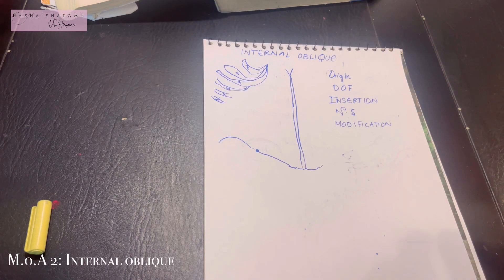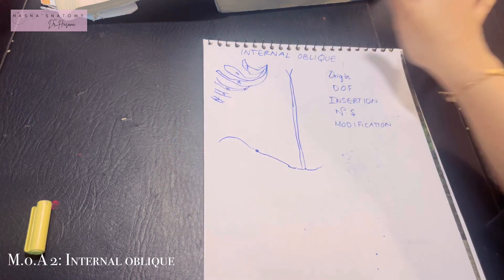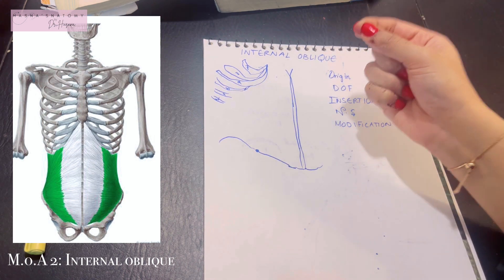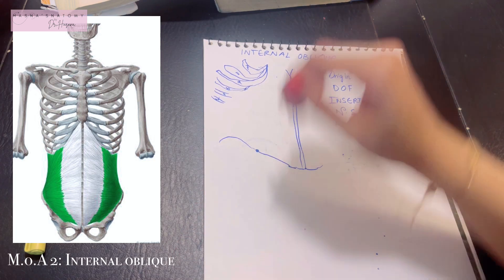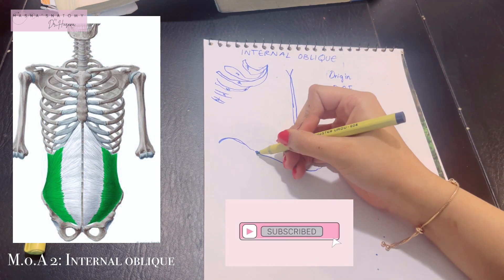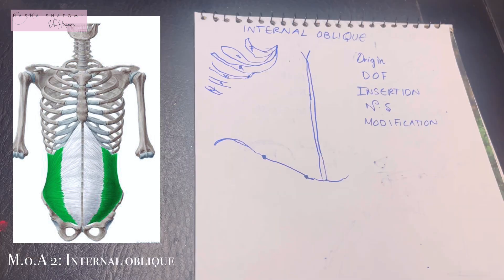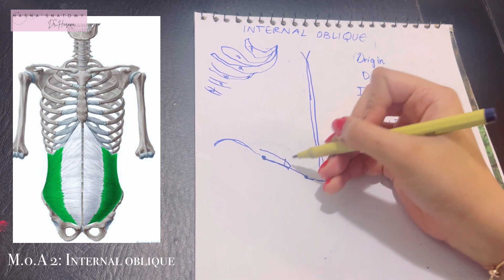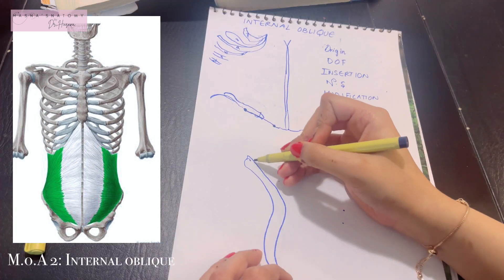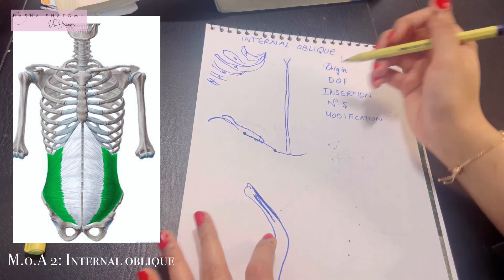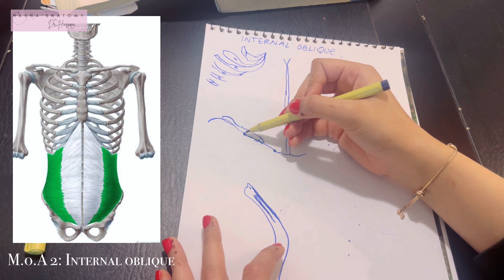Now let's talk about the internal oblique, the second flat muscle of the anterolateral abdominal wall. Its origin is quite opposite to the external oblique in that it arises from below. The origin is from the lateral two-thirds of the inguinal ligament and from the intermediate area of the anterior two-thirds of the iliac crest.